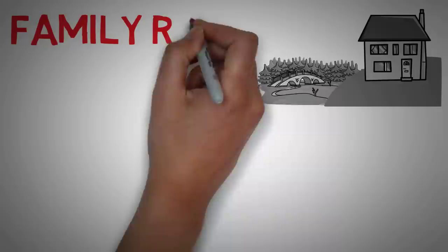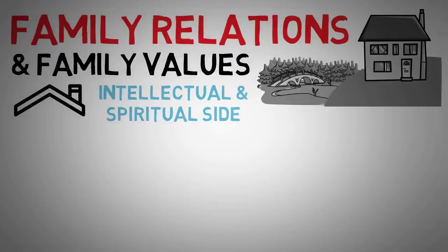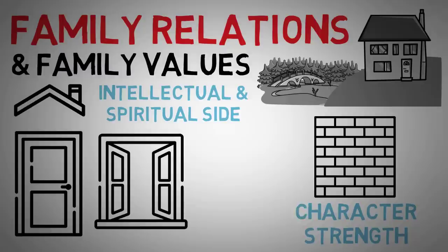Drawing a house. The house is considered to be the expression of the respondent's family relations and family values. The roof stands for the intellectual side of the spiritual life of the individual. The walls might be related to the test taker's character strength. And the doors and windows represent the individual's relationship to the outside world and the level of social integration.